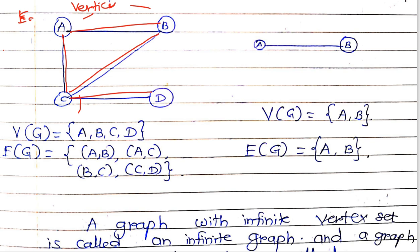Taking this graph as an example, it can be represented as: vertices of G = {A, B, C, D}. And for the edges, E of G — that is, edges of G — the first edge is A to B, the second is A to C, the third is B to C, and the fourth is C to D.